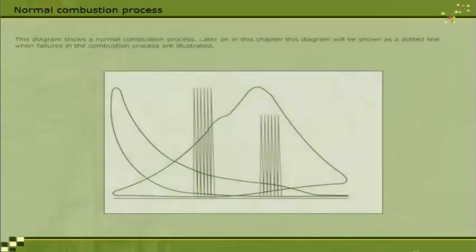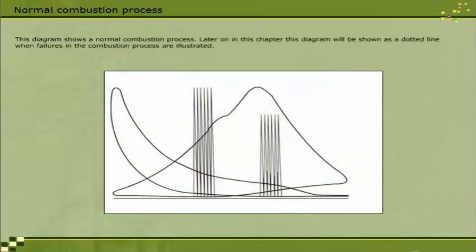This diagram shows a normal combustion process. Later on in this chapter, this diagram will be shown as a dotted line when failures in the combustion process are illustrated.